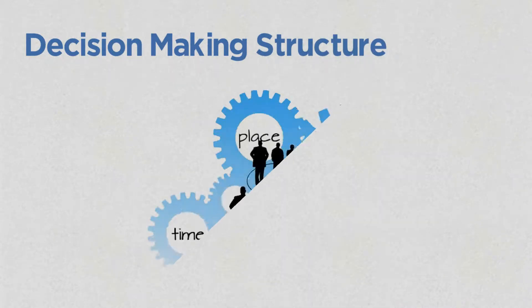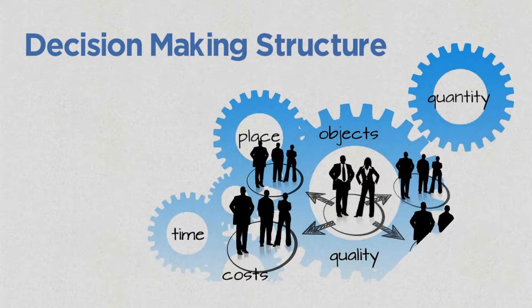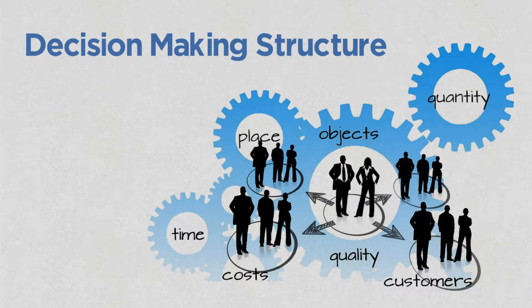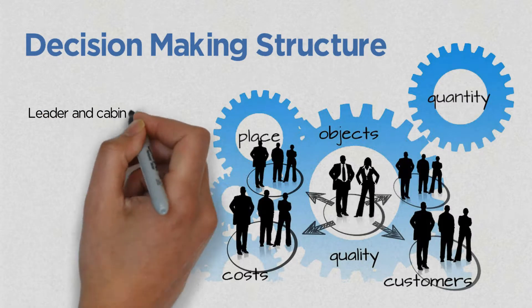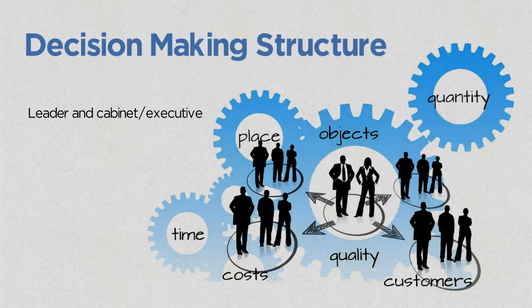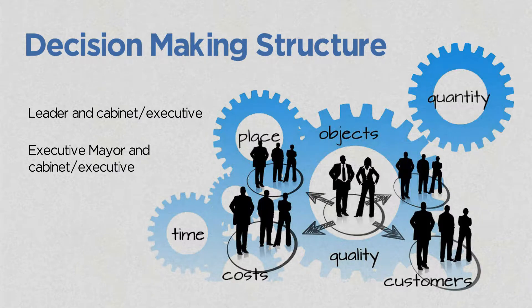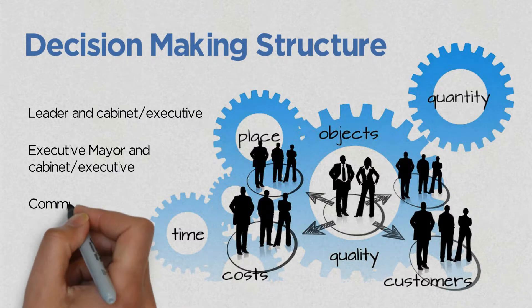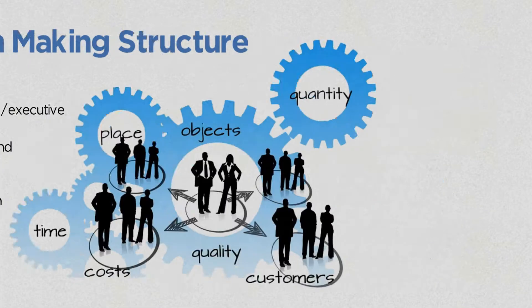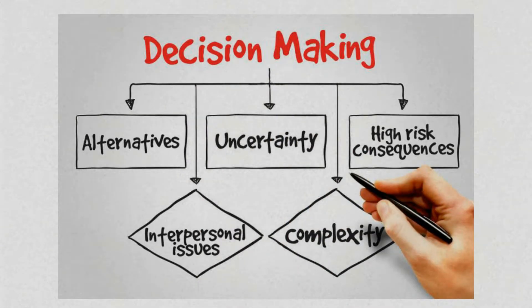The council's decision-making structure. Local authority governance is the framework within which decisions are made and implemented. There are broadly three types of council structure: one, leader and cabinet executive; two, executive mayor and cabinet executive; three, committee system. The most common model in England and Wales is that of leader and cabinet, and this is the model operated by Boston Borough Council and all other districts in Lincolnshire.